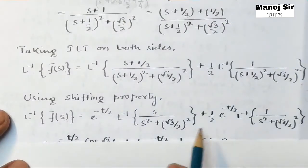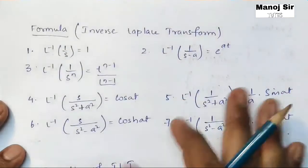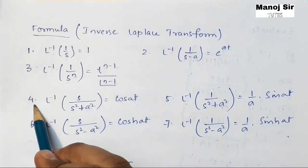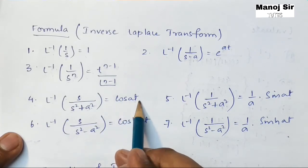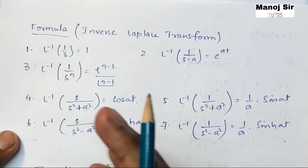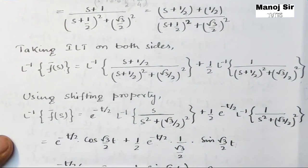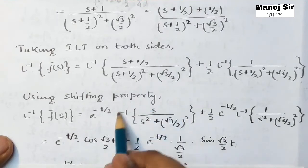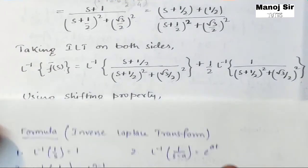Now we apply formula number 4: the inverse Laplace transform of s upon (s² + a²) = cos(at). Here the value of a is √3/2. So the first term becomes e^(−t/2) · cos(√3/2 · t).